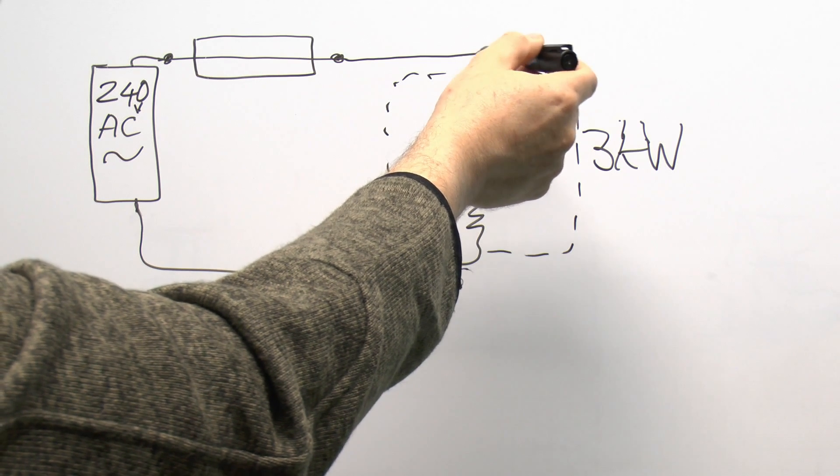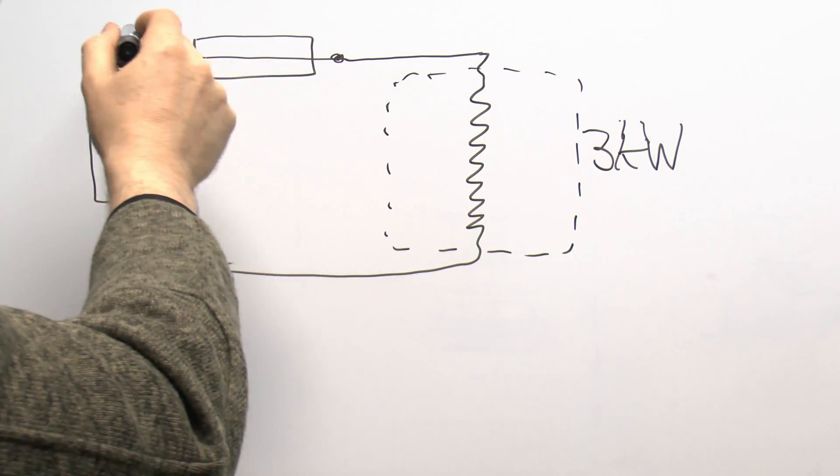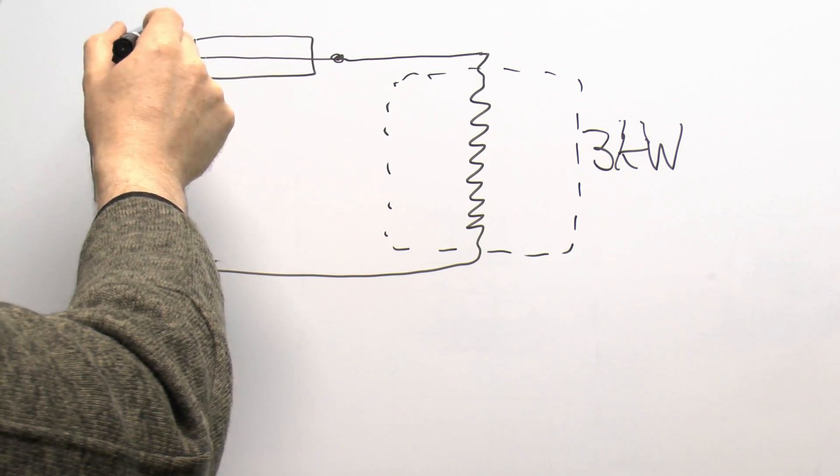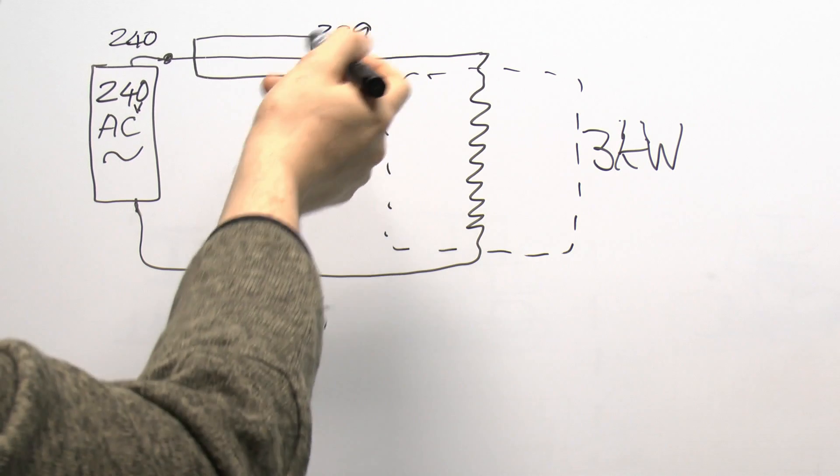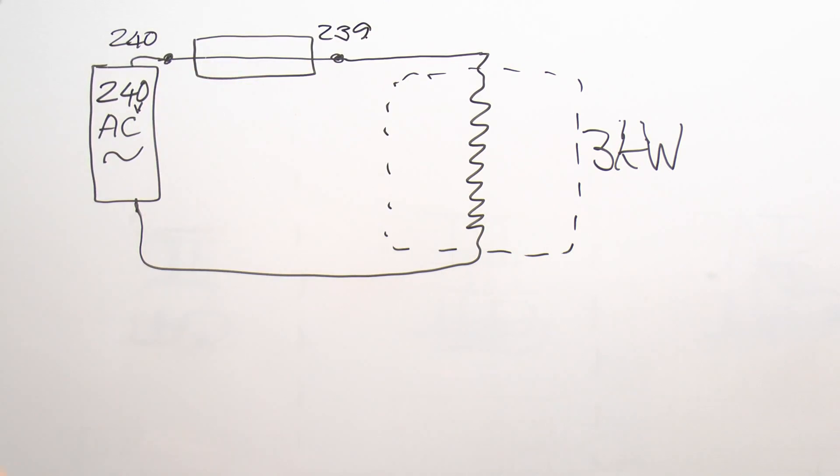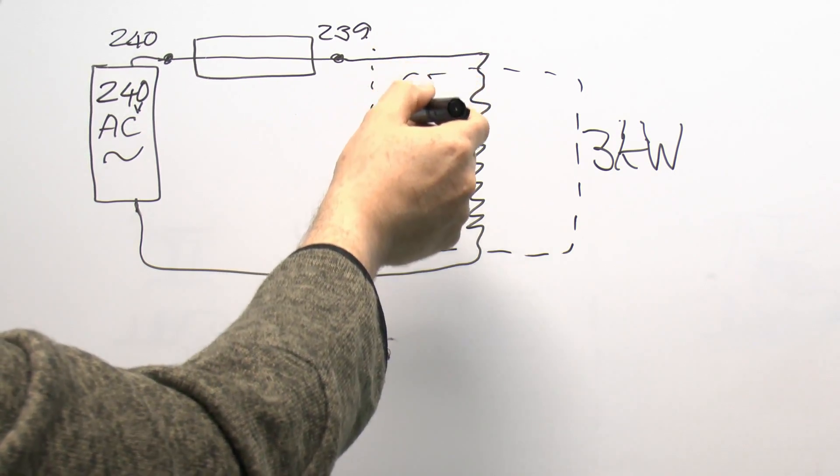So in the example here you might have say 240 here, probably say 239 there perhaps depending on the resistance of it which is going to be extremely low. And then this will be your zero volts here.